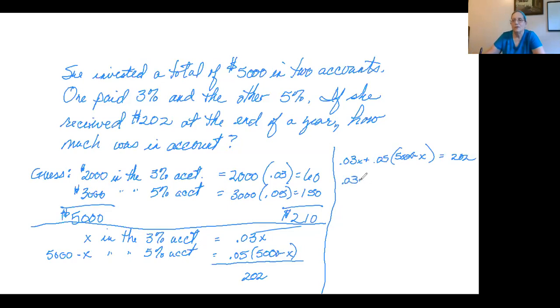Get rid of parentheses. So 0.05 times 5,000 is $250 minus 0.05X. 0.03X and negative 0.05X are on the same side. This one's positive, this one's negative. So those two are going to add up to negative 0.02X.